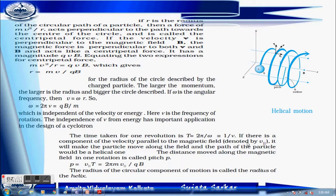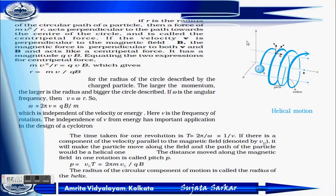If there is a component of velocity parallel to the magnetic field, the particle moves along the field and the path is helical. The distance moved along the magnetic field in one rotation is called the pitch, P = 2πMv∥/QB. The radius of the circular component of motion is called the radius of the helix.